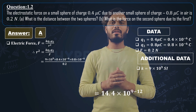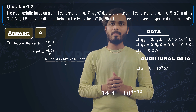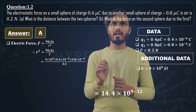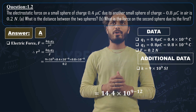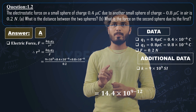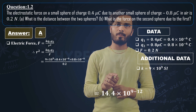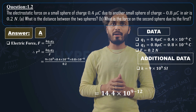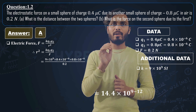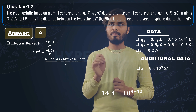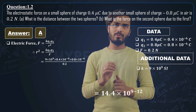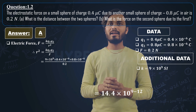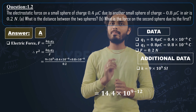Next step: performing 9 into 0.4 into 0.8 divided by 0.2 gives 14.4. For the powers of 10: in the numerator we have 10 raise to 9, minus 6, and minus 6. So 9 plus (minus 6) plus (minus 6) gives 9 minus 12, which equals minus 3. So r square equals 14.4 cross 10 raise to minus 3.